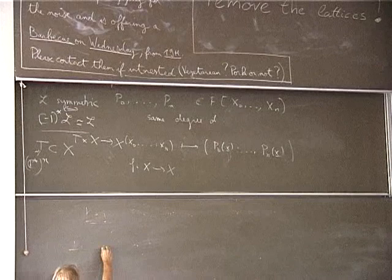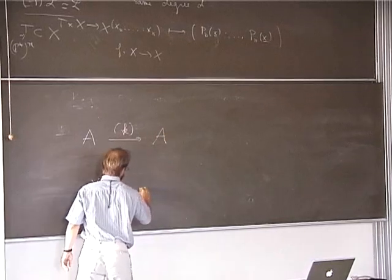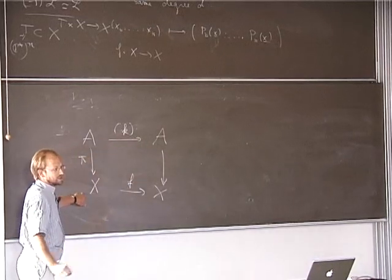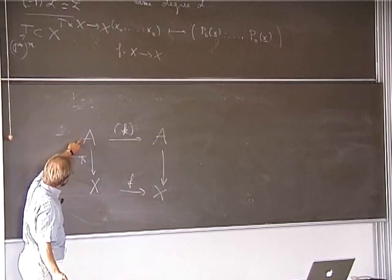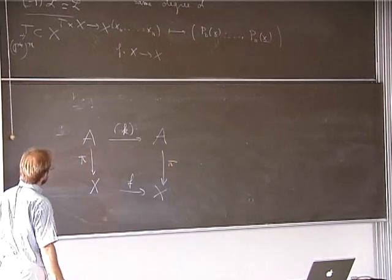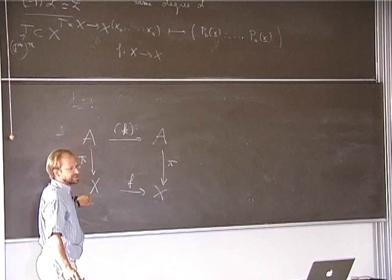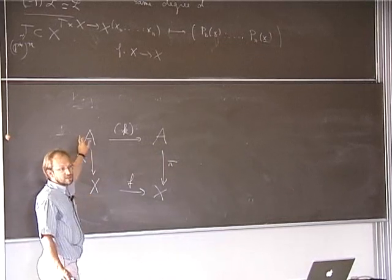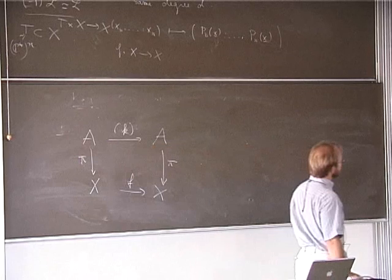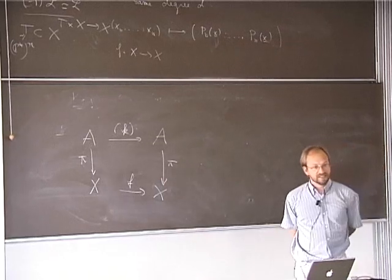If A is an abelian variety and you look at the multiplication-by-k map on A, then the dynamical system is just a quotient: there is a finite map π from A to X, so X is a quotient of A by a finite group, and the diagram commutes. In some sense the dynamical properties of f are very close to those of A. Zhang proved that if the first Chern class of X is not zero, then X is uniruled.